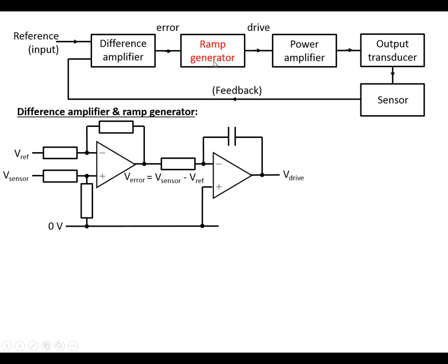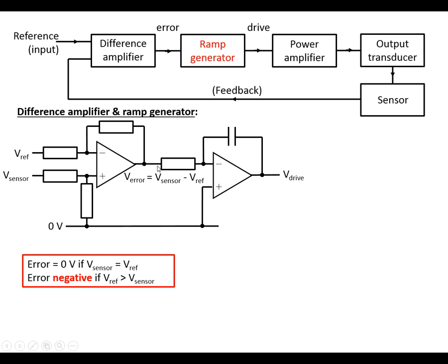The difference amplifier and ramp generator can be built as follows: that's the difference amplifier as before but we've swapped over the reference and the sensor, so we've now got the sensor going into the non-inverting input, and then this is the ramp generator providing the drive signal. The error is going to be zero if the sensor and reference are the same voltage, negative if the reference is larger than the sensor, which will mean that the drive will ramp upwards, and the drive is going to be constant if V sensor and V ref are the same.